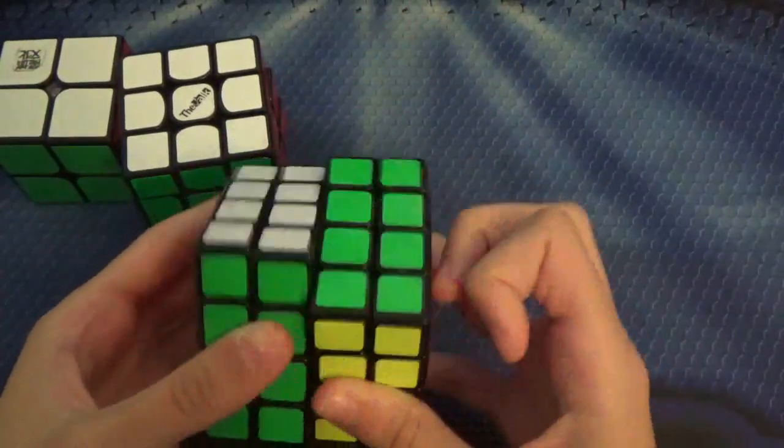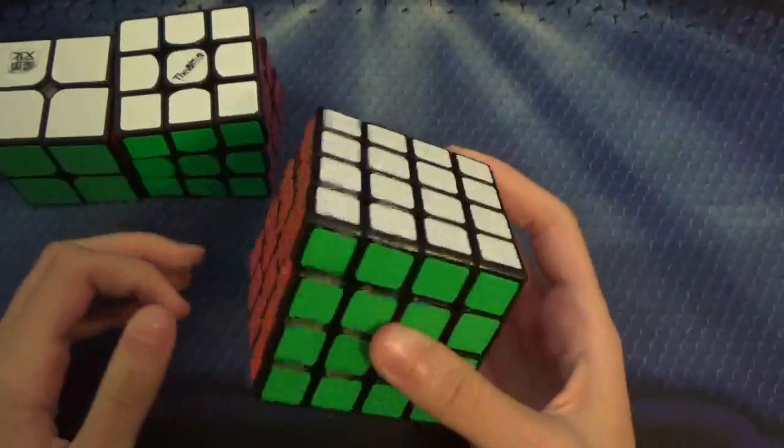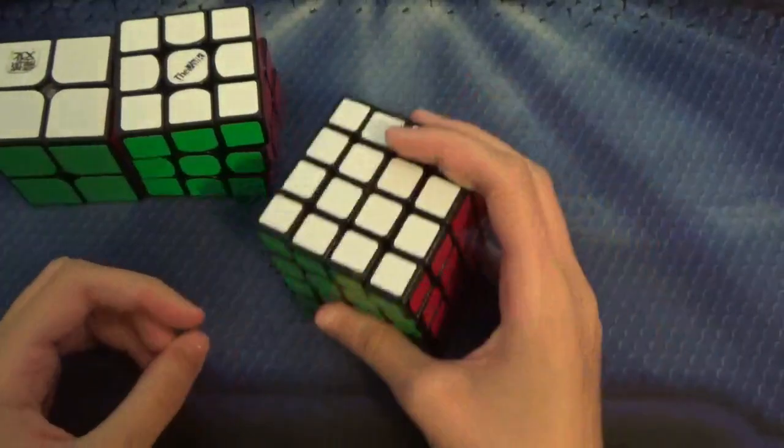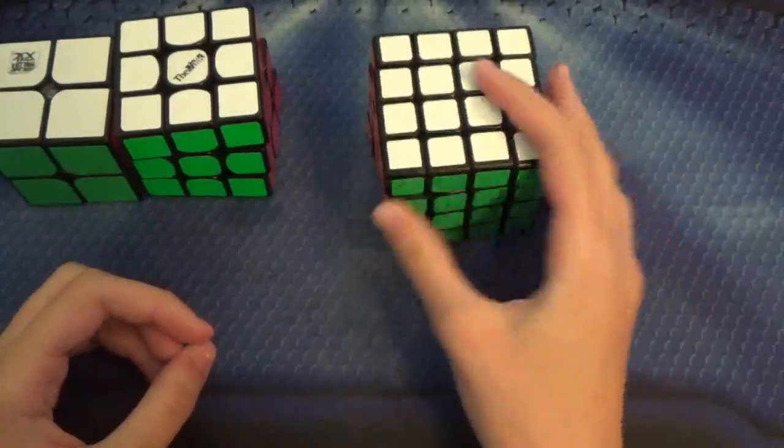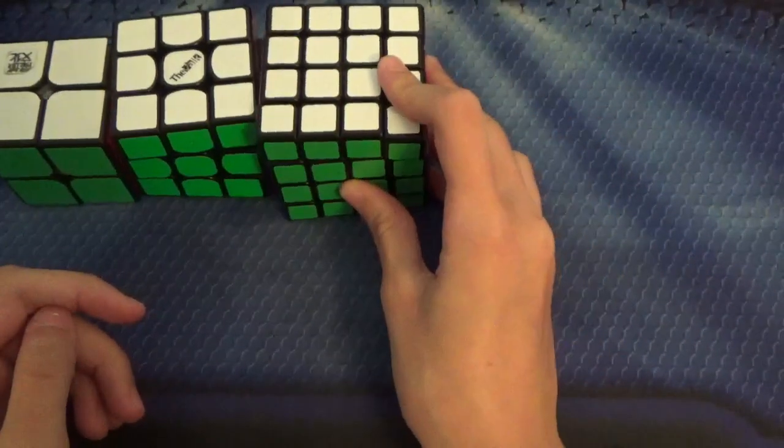For 4x4, this is the Moyu Aosu, the full-size one. Sub 45 average and sub 40 single. Maybe I'd like to break my comp PB for single too. I'm not sure about that, but hopefully I'll be able to get my PB for average.